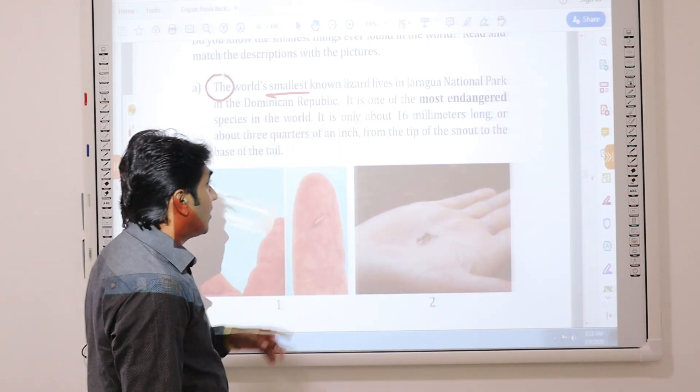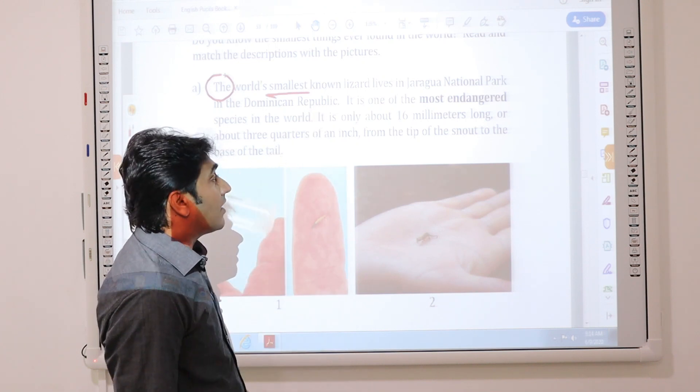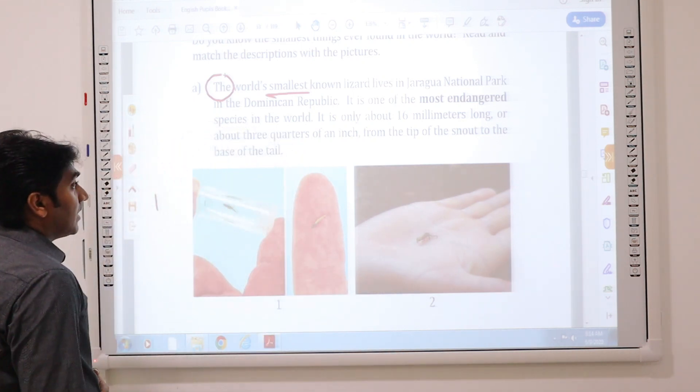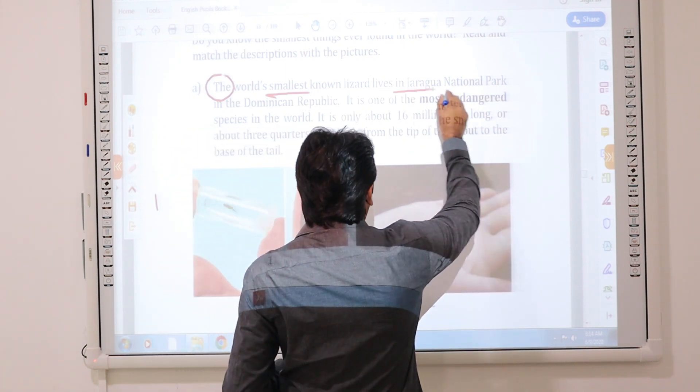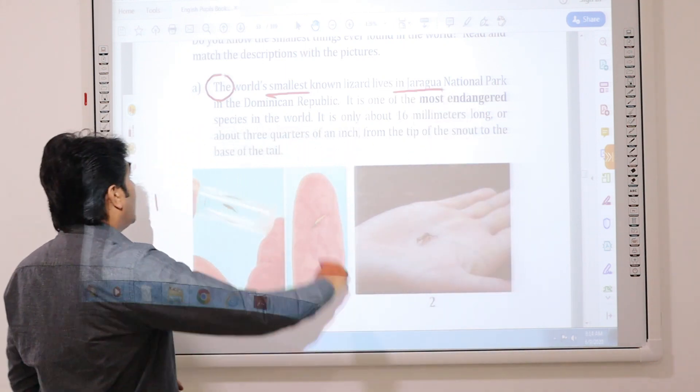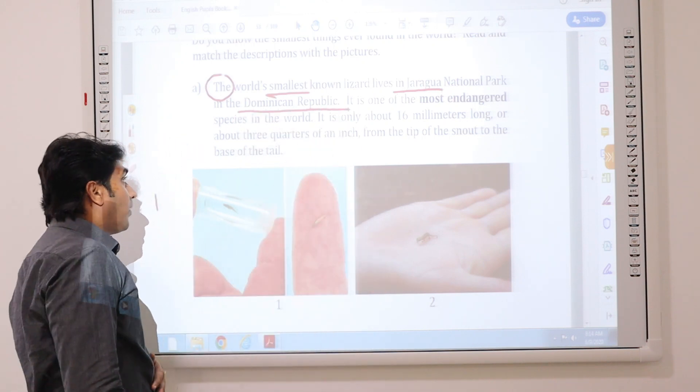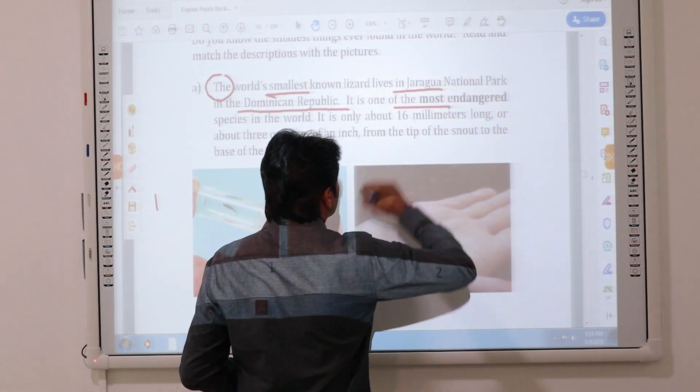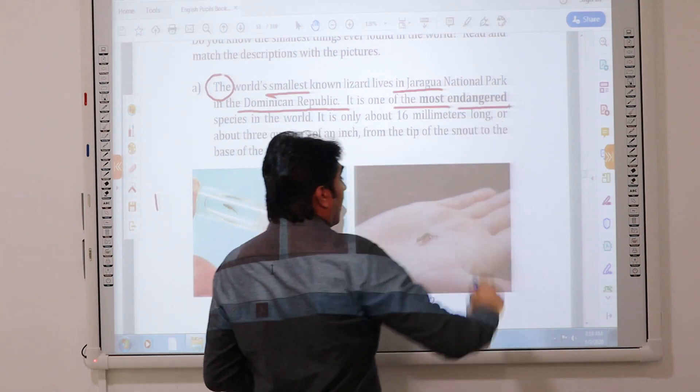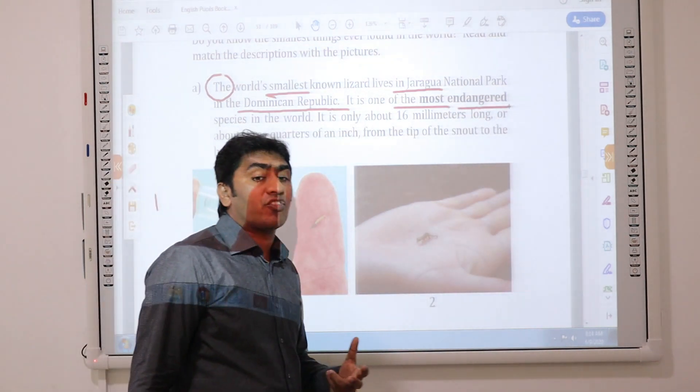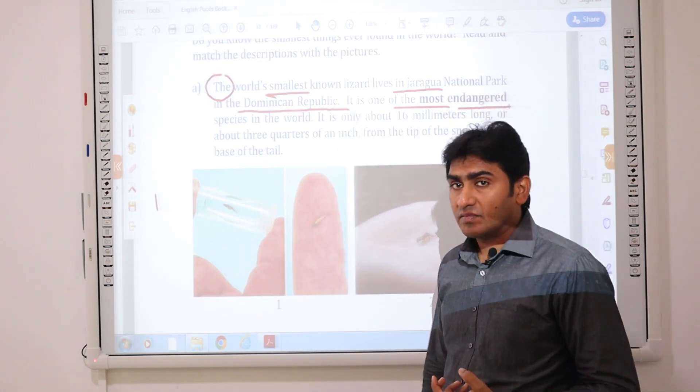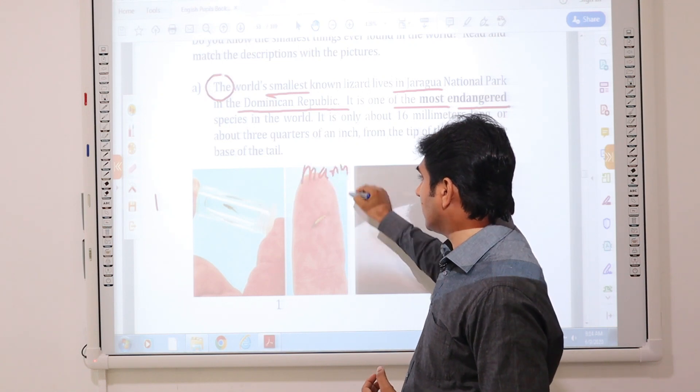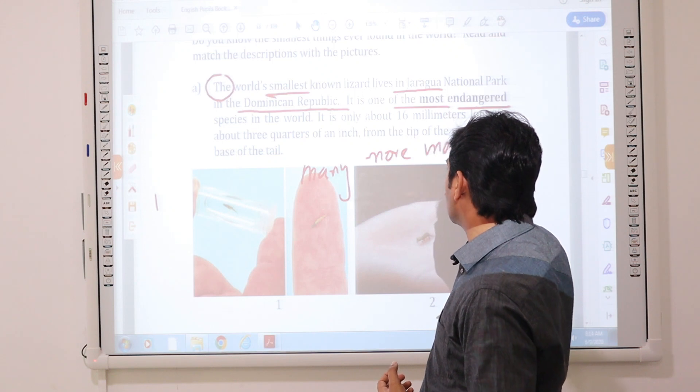Non-lizard. Lizard means gecko. Lives in Geragua national park in the Dominican Republic. It is one of the most endangered. Endangered means in danger of extinction. The most. Now, how is it? Many, more, most.